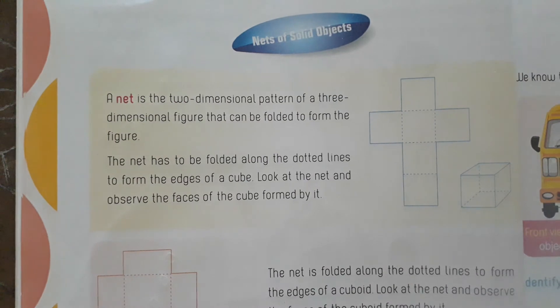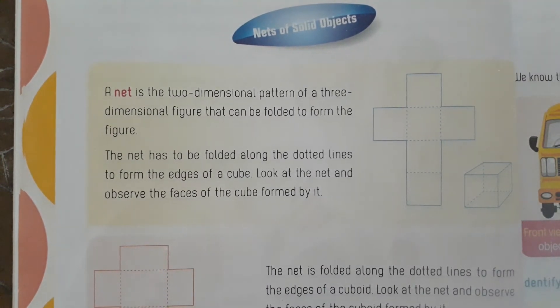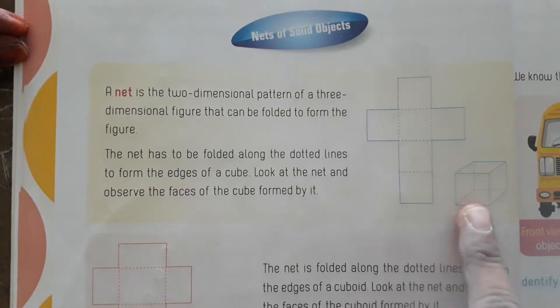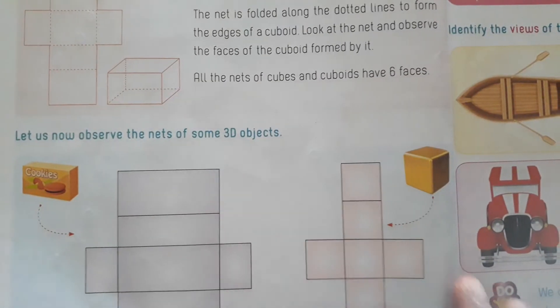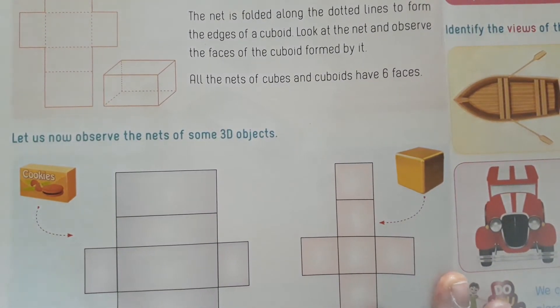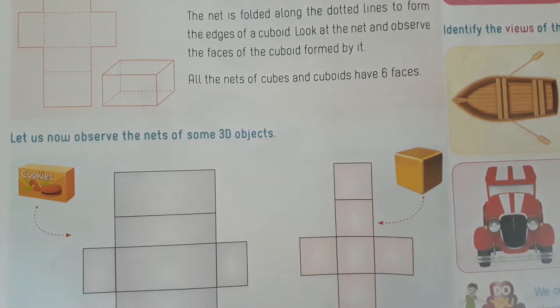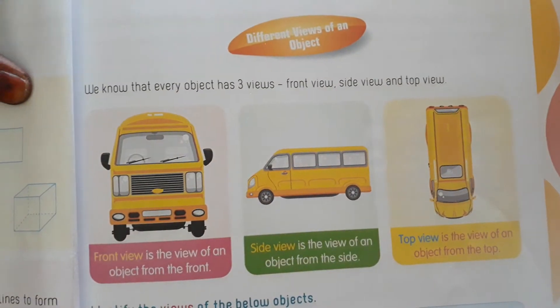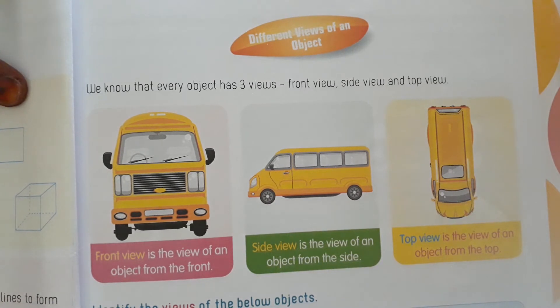Now open your course book, children — page number 8. Nets of solid objects, already explained. Let us now observe the nets of some 3D objects; this covers cuboid and cube net forms. Next, open page number 9: different views of an object. Every object has three views: front view, side view, and top view, which you have already learnt in the previous class.